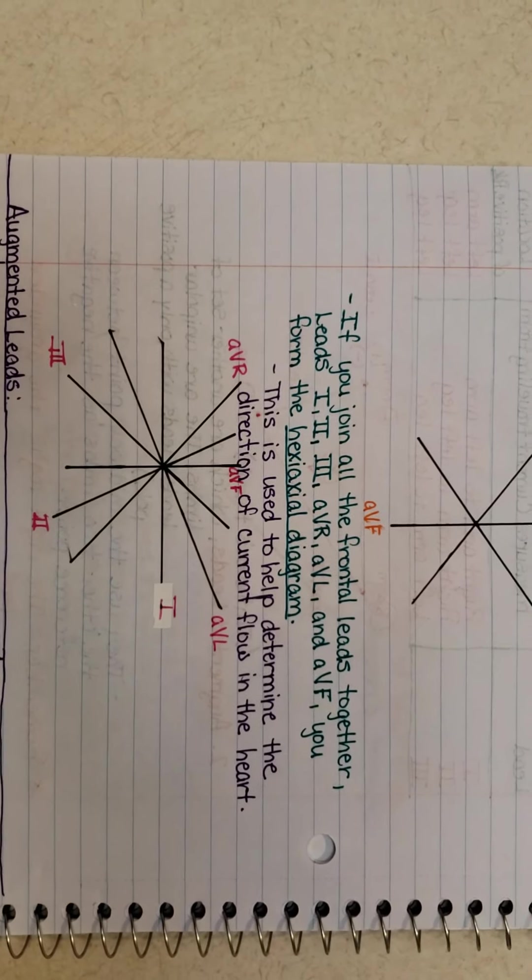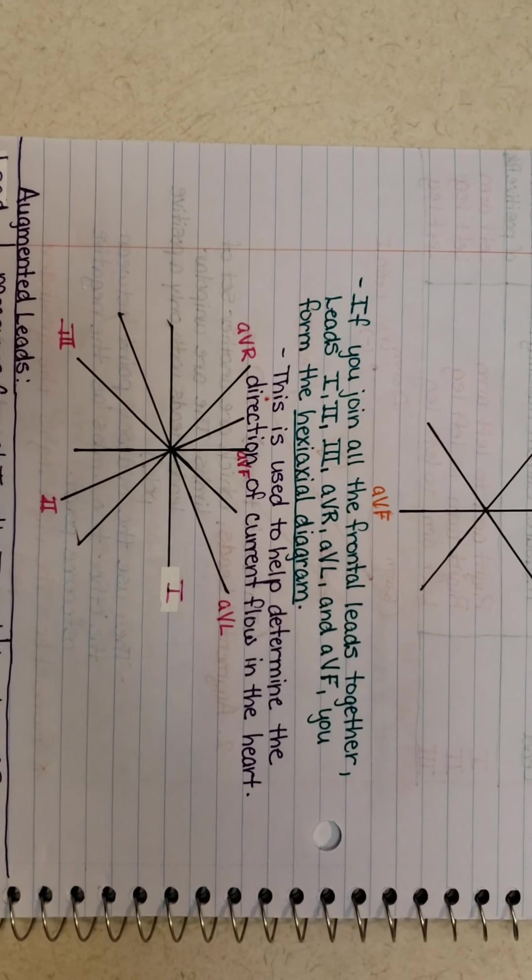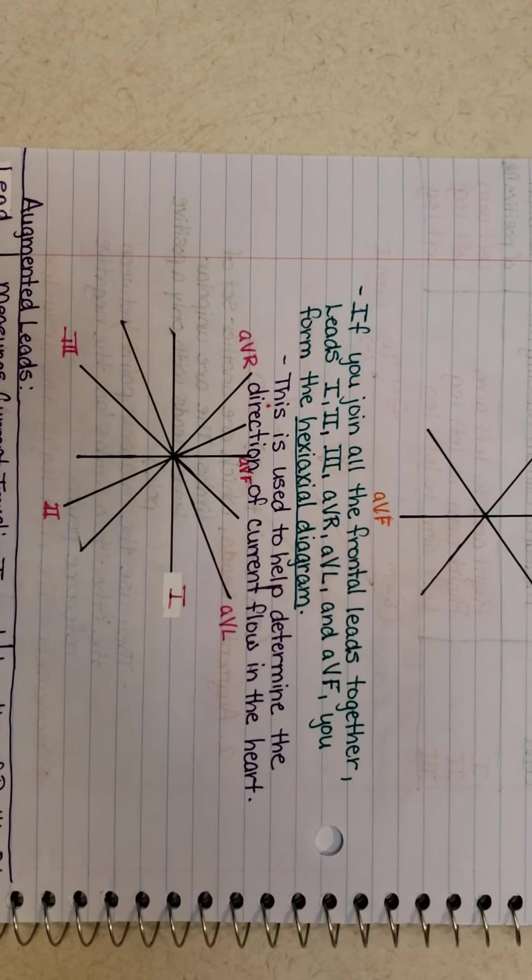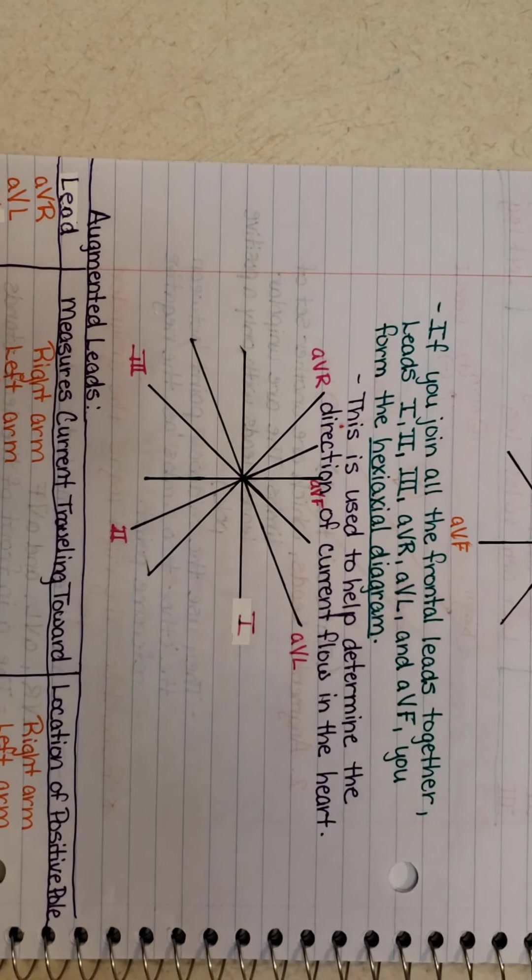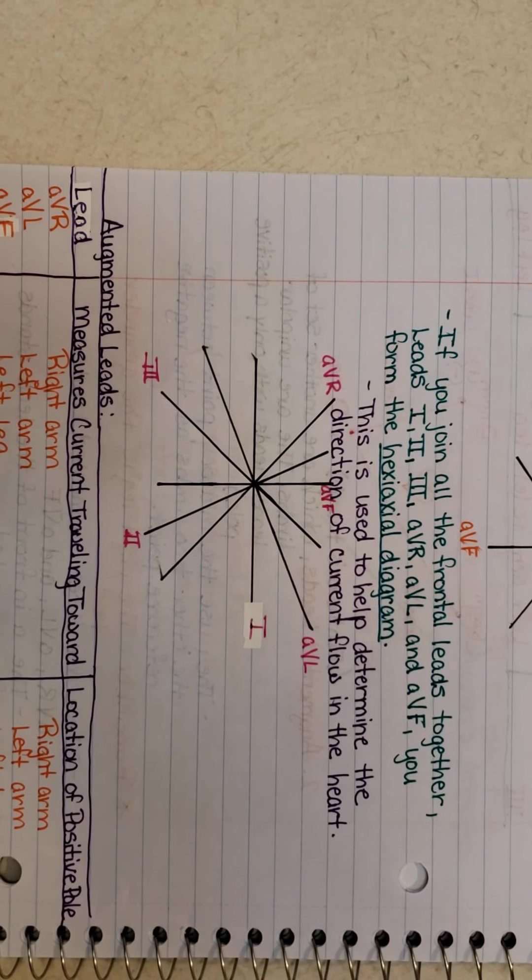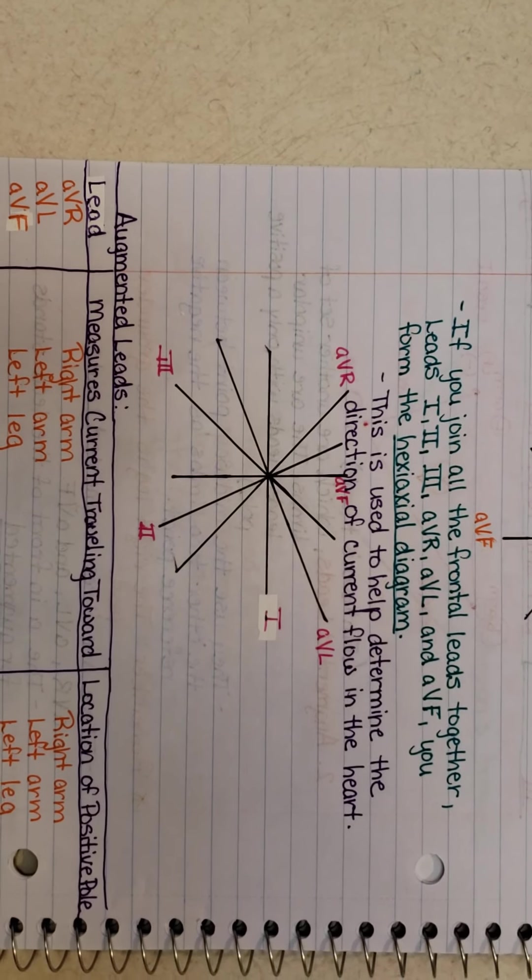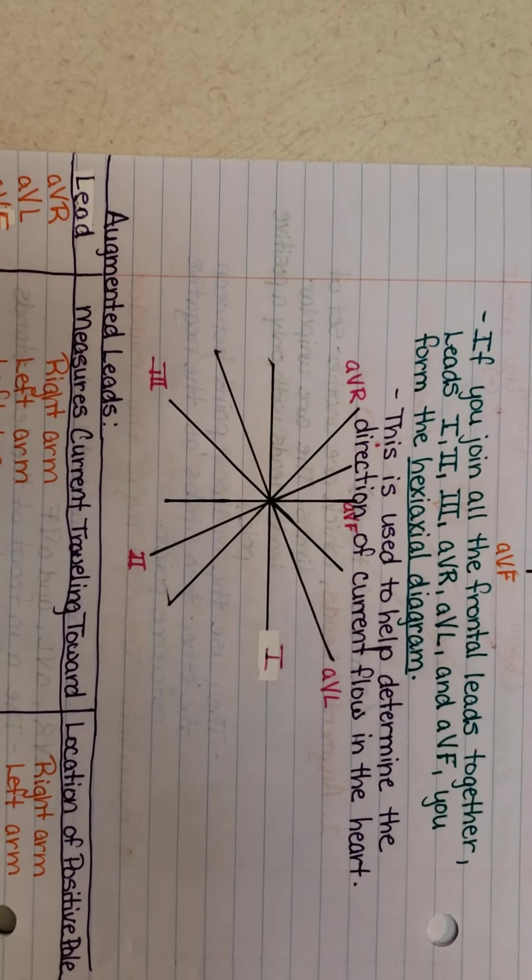If you join all the frontal leads together, leads one, two, three, AVR, AVL, and AVF, you get what we call the hexiaxial diagram. This is used to help determine the direction of the current flow of the heart. And there you go.